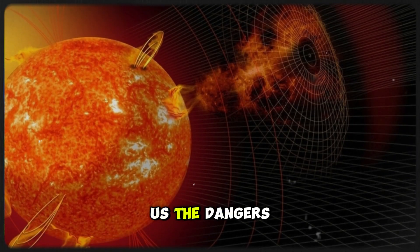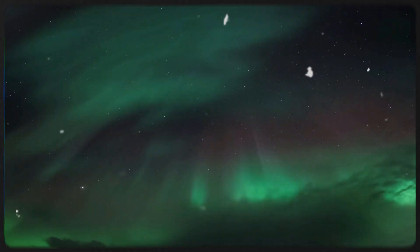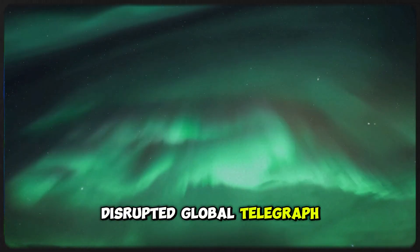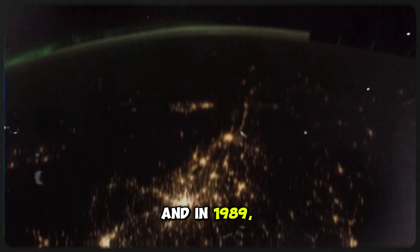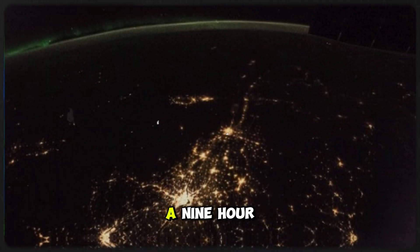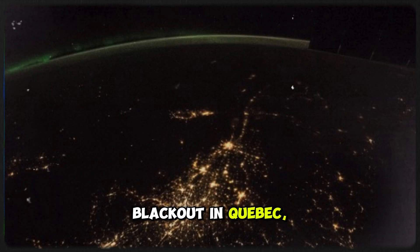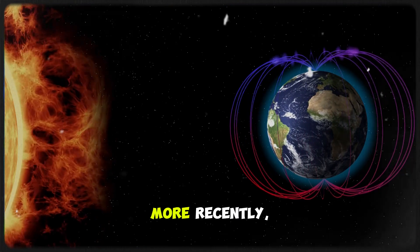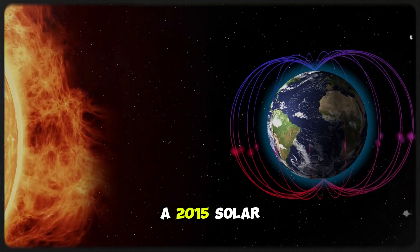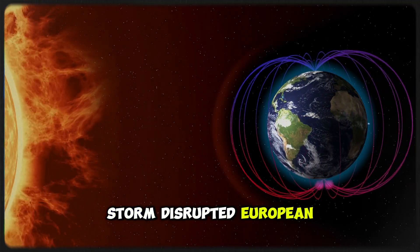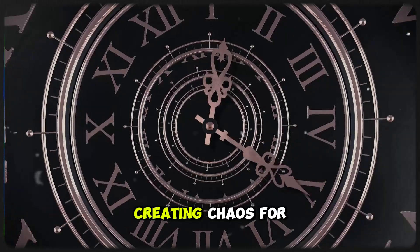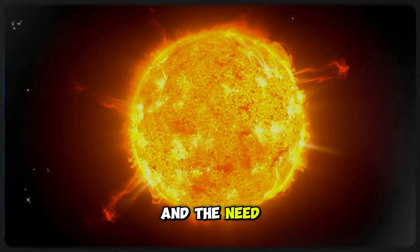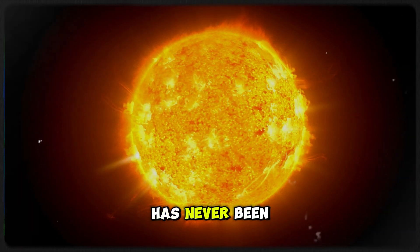History has shown us the dangers of CMEs. The 1859 Carrington event disrupted global telegraph systems, and in 1989, a CME caused a nine-hour blackout in Quebec, leaving six million people without power. More recently, a 2015 solar storm disrupted European air traffic control, creating chaos for hours. The stakes are high, and the need for early detection has never been greater.